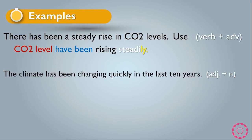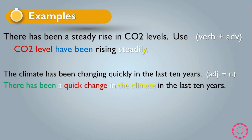Another example: 'The climate has been changing quickly in the last 10 years.' If asked to use the adjective plus noun rule, it becomes: 'There has been a quick change in the climate in the last 10 years.' Here 'there has been' follows the rule, 'quick change' is the adjective plus noun, and 'in the climate' is followed by the rest of the sentence.